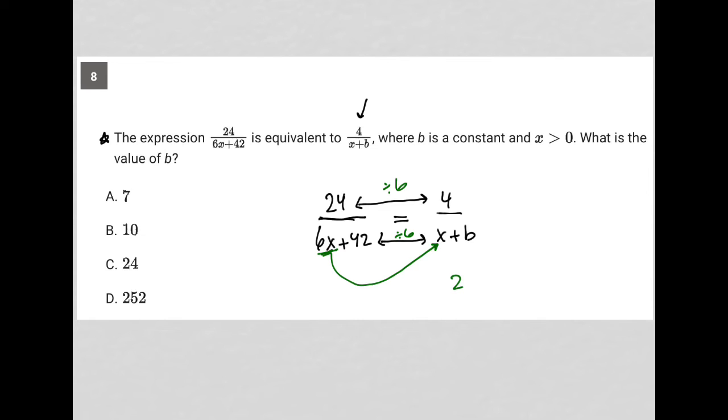If I take 24 over 6x plus 42, and I divide the top by 6, and I divide the denominator by 6, what I'm left with in my numerator is 4, which is what I expect to get. And I divide each thing by 6 in the denominator. 6x divided by 6 is just x. 42 divided by 6 is 7.